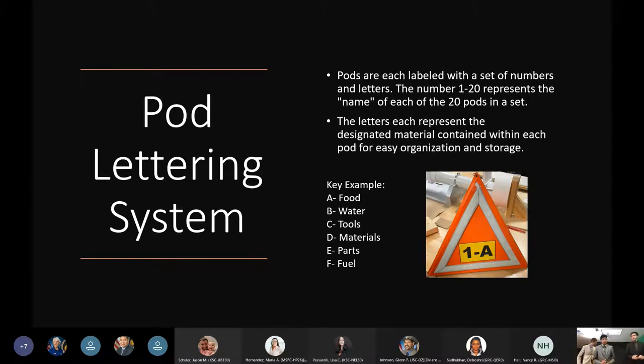As you can see, we have the pod lettering system. The number represents which pod it is out of an assembly of 20, which is how many it takes to make the geodesic sphere. The letters denote contents like food, water, tools, materials, parts and fuel. Our pods won't be able to carry delicate materials or robotic parts because we're intending for this to break and take the full impact force.